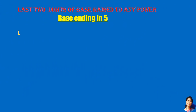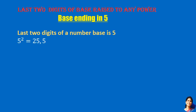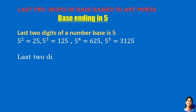Next, we will see the last two digits of a number when the base is 5 raised to a power. We observe that 5 squared is 25, 5 cubed is 125, 5 to the 4th is 625, and 5 to the 5th is 3125. You observe that the last two digits are always 2 and 5.